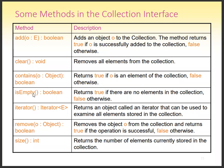The iterator method returns an object called an iterator, which can be used to examine all elements stored in the collection. The remove method is used to remove a particular object from the collection. To check the size of a particular collection, we use the size method — it returns the total number of elements available in that collection container.